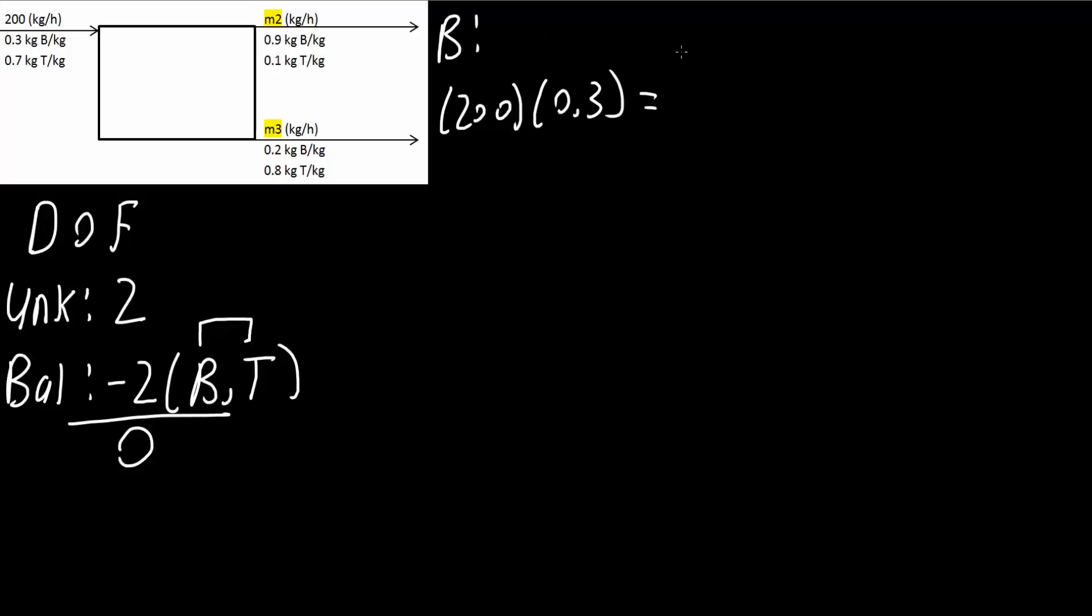is equal to M2, that's what we're solving for, M2, times 0.9, plus M3 times 0.2. That is our B balance.